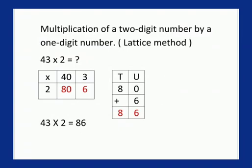Let's take another example. 43 multiplied by 2. Here 43 is the multiplicand. So let's write its expanded form. 43 is equal to 40 plus 3. Let's start multiplying.